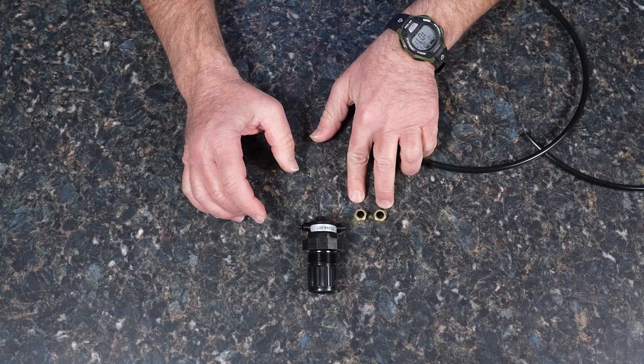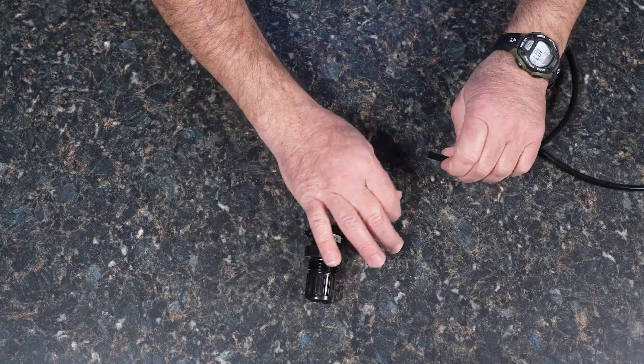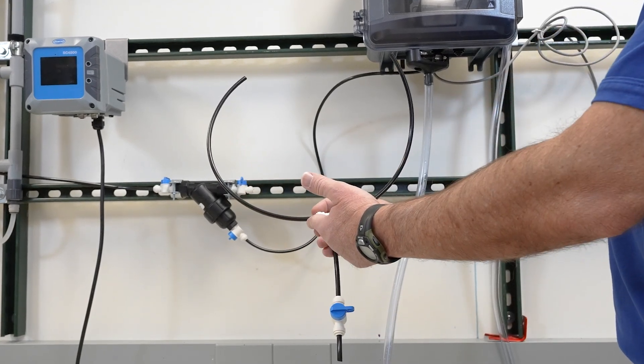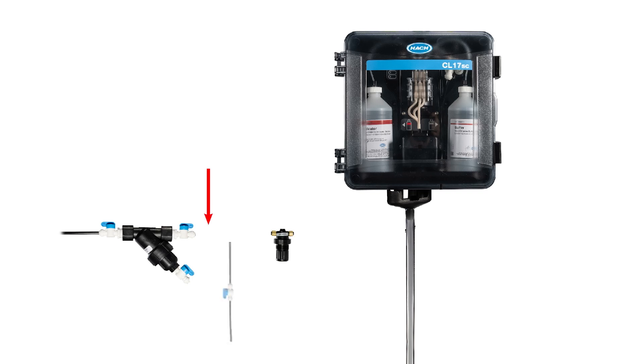Assemble the pressure regulator and grab sample assembly before installation. Attach black tubing from the Y-strainer to the inlet port of the grab sample assembly. Next, attach black tubing from the right side of the grab sample assembly to the inlet port of the pressure regulator. Finally, connect another piece of tubing from the output of the pressure regulator to the inlet port of the analyzer.